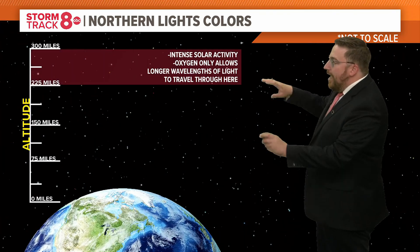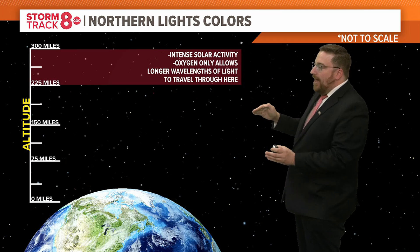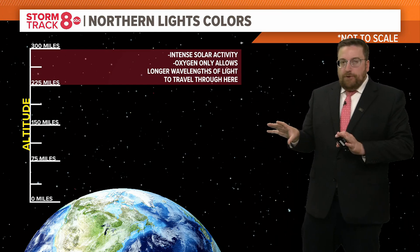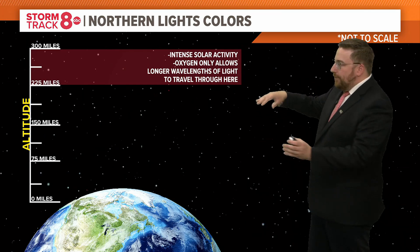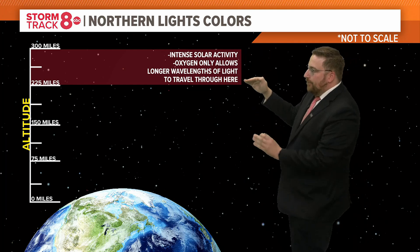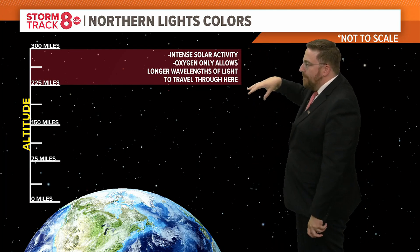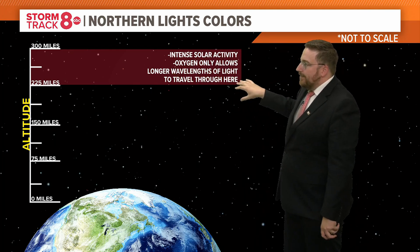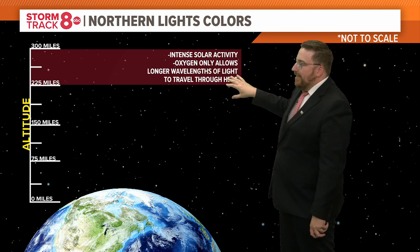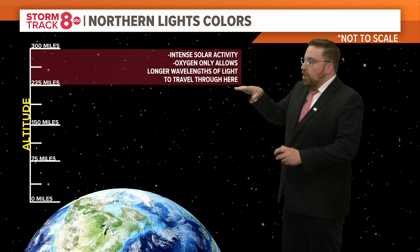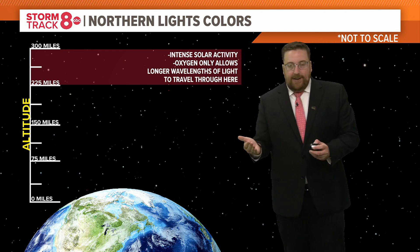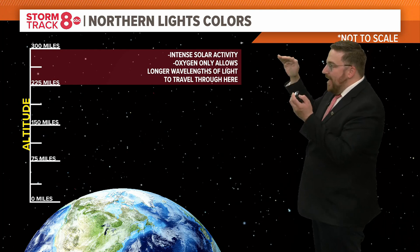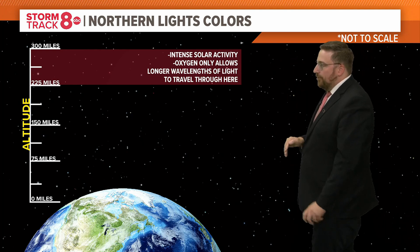We talked about this last week. It really depends on the level of the atmosphere that these particles move through that gives you the certain color. At the highest levels — 225 to 300 miles up — that's where you get this red color, because oxygen only allows the longer wavelength variations of light to move through, which would be red.